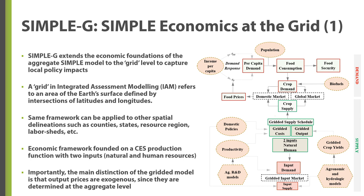The gridded version of the Simple model, known as Simple G, applies the theoretical framework to each grid cell engaged in agricultural production. The concept of grid cells is widely used in integrated assessment modeling and refers to an area on the Earth's surface defined by the intersections of latitudinal and longitudinal lines. The exact size of grid cells in the different models within Simple G is discussed in further detail in later chapters. The same framework can be applied to other spatial delineations, such as counties, states, farm resource regions, or labor sheds, as they are relevant to the research question.